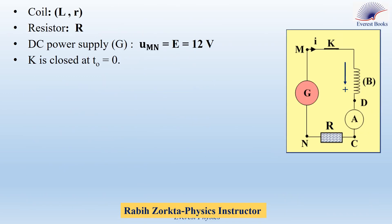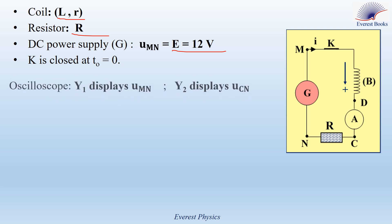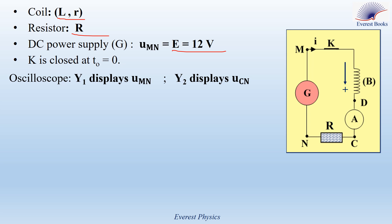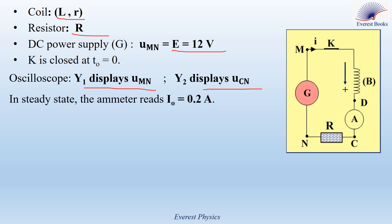The study of the ignition system in certain cars is reduced to the study of a circuit formed by a coil V of inductance L and internal resistance r, a resistor of resistance R, and a meter A of negligible resistance, a switch K, all connected in series across a DC power supply providing a voltage UMN equal to E equal to 12 volts. The switch K is closed at time zero. We display using an oscilloscope the voltage UMN on channel Y1 and the voltage UCN on channel Y2. In the steady state, the ammeter reads a current denoted by I0 equal to 0.2 amperes.